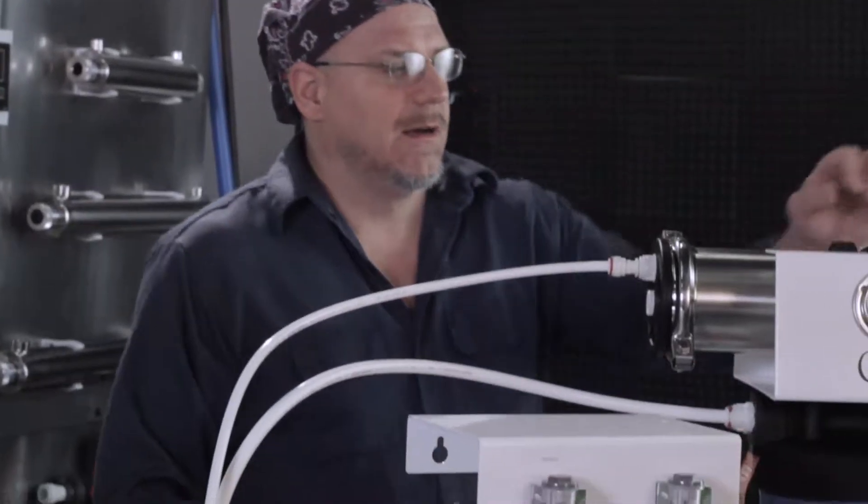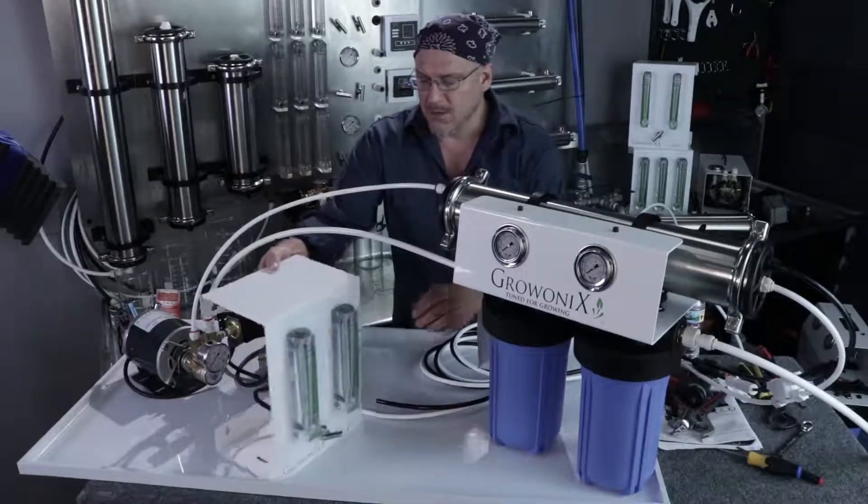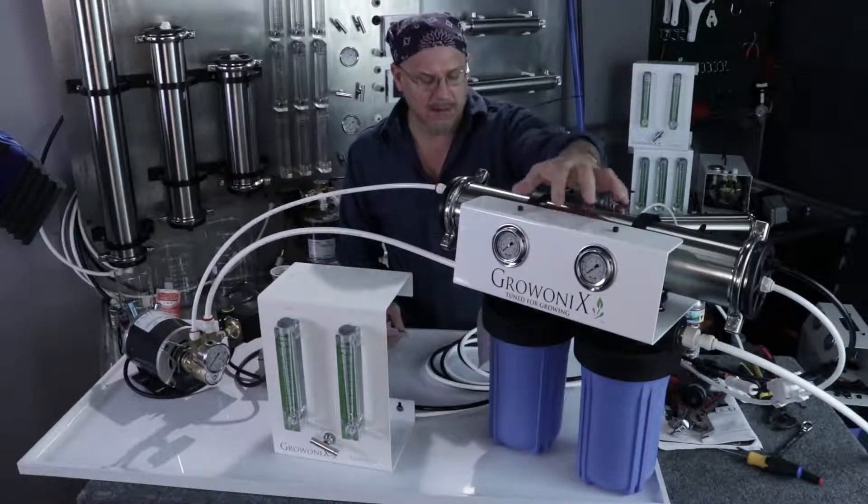We're going to install this Flowbox on top of this EX-1000. Of course we could always remote locate it on the wall as well, but for this demonstration we're going to mount it right on top.